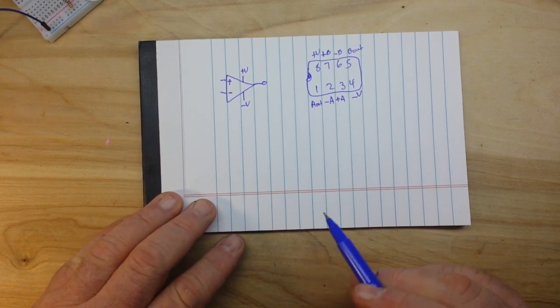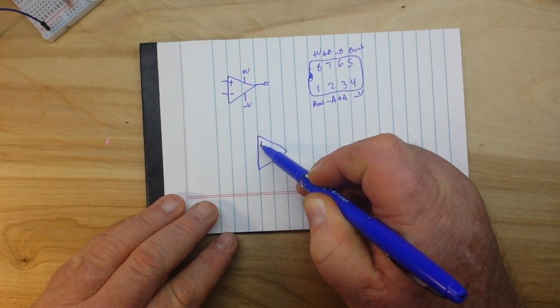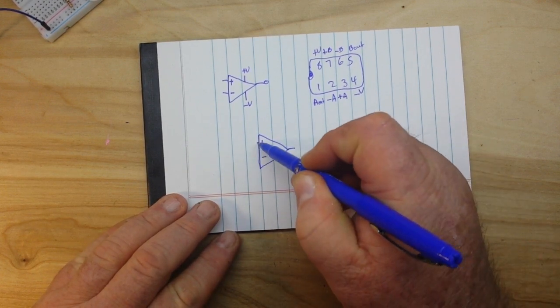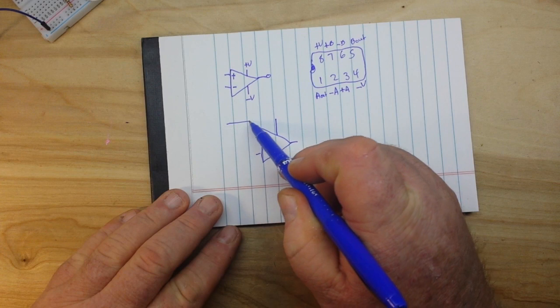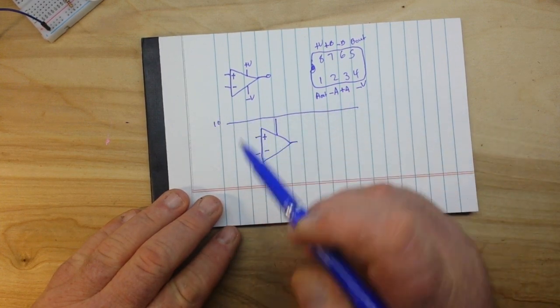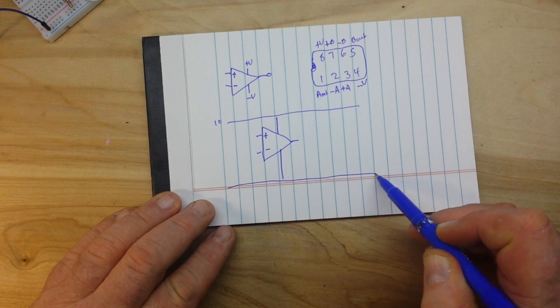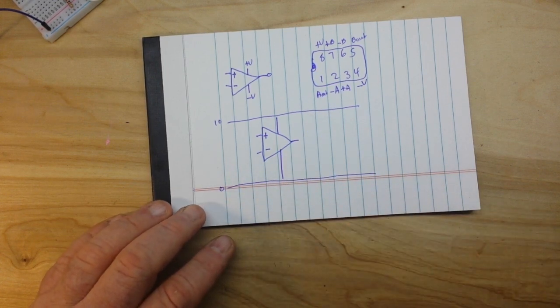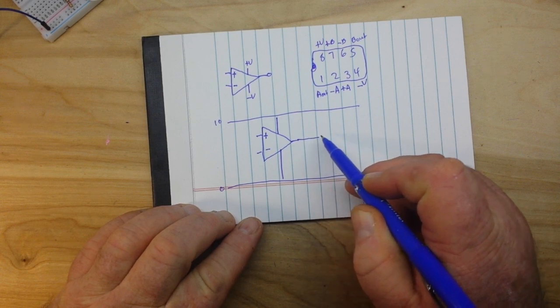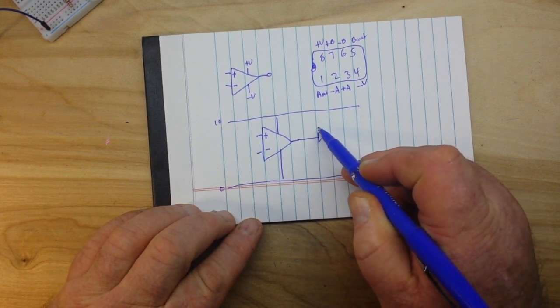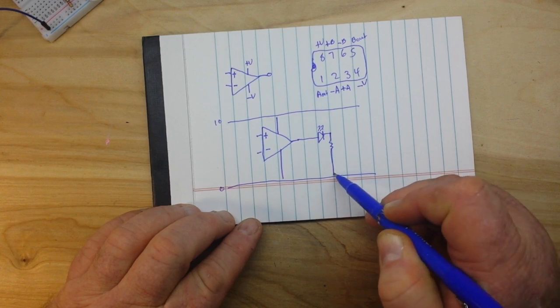So let's start and design a simple comparator circuit here. Here's our op-amp - non-inverting, inverting, output. We'll connect plus V to our positive rail, which in this case we'll make it 10 volts. Now we're going to connect minus V to our ground rail, which we'll call 0 volts. And for our output we'll use an LED which will connect with a current limiting resistor to ground.